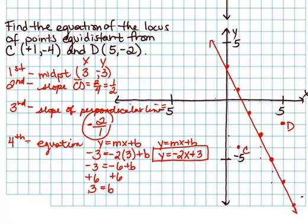My perpendicular bisector looks something like this. So it was a little off from my original one. And the equation is y equals negative 2x plus 3.